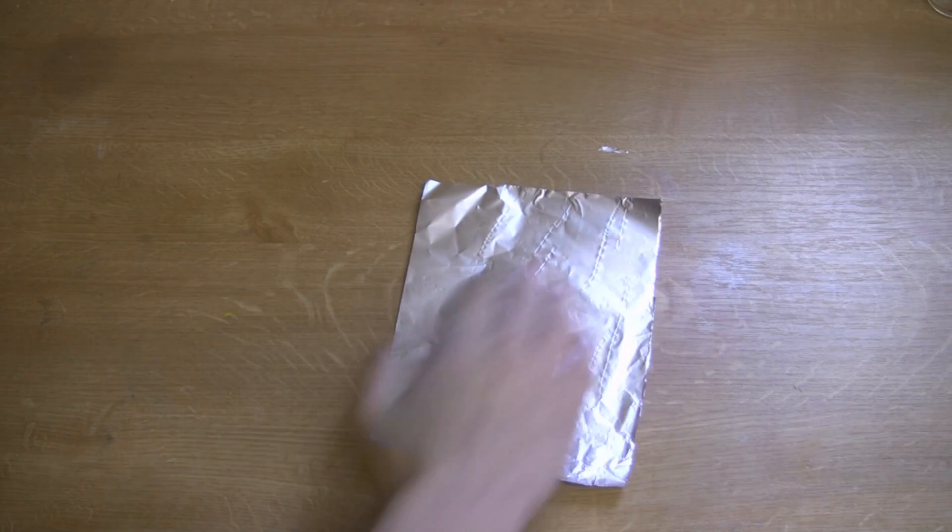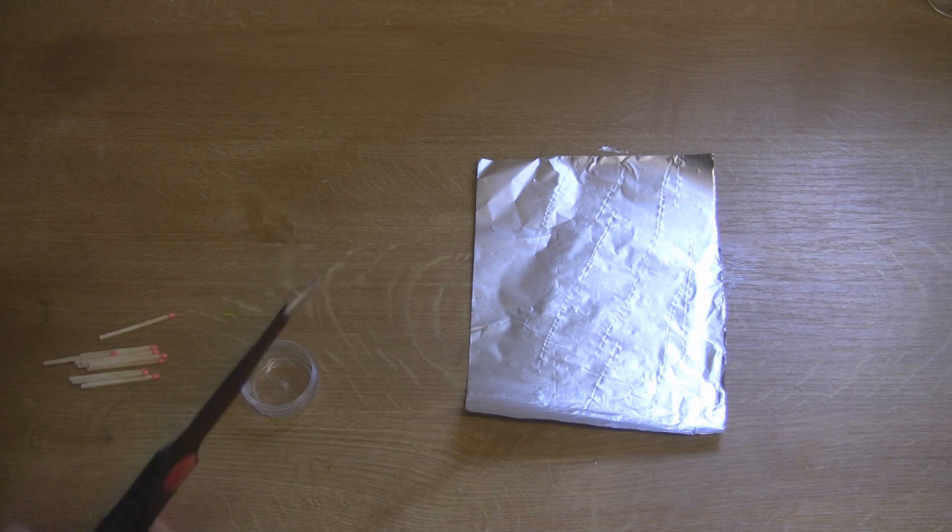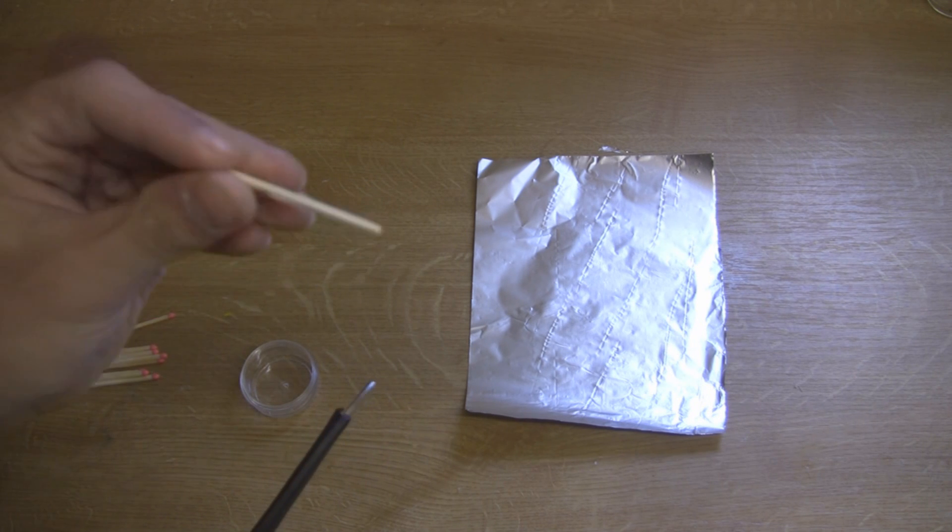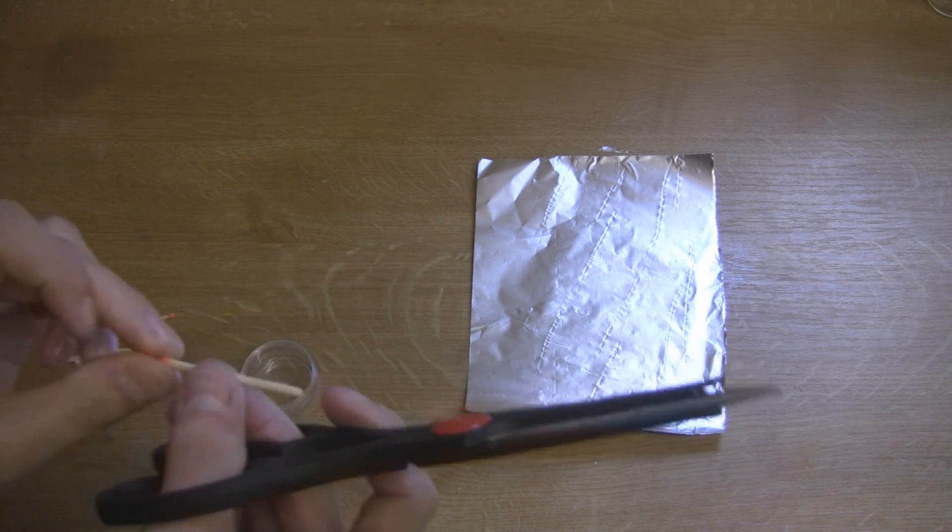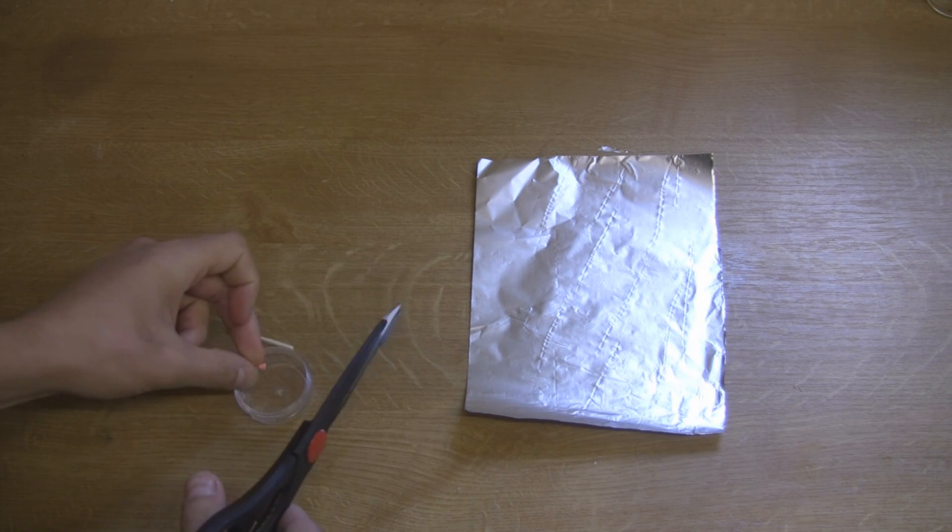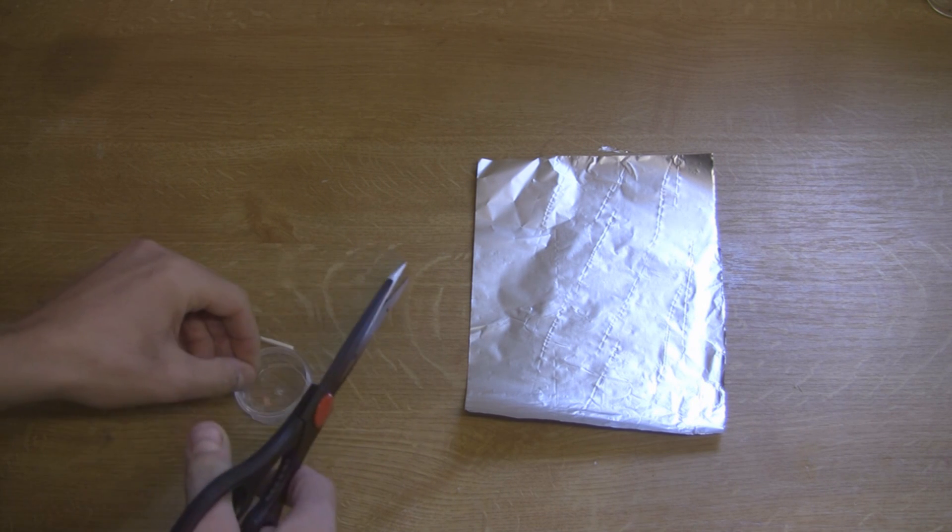We're going to put that out of the way for a minute and take our matches and cut off the match heads. We want to put them in a little container because they will go flying. Whatever end you hold, the other end is going to go flying. So if you hold the lighting end, you can slip off the rest. Just collect about 10 to 12 match heads.